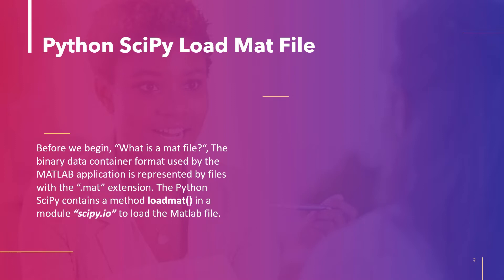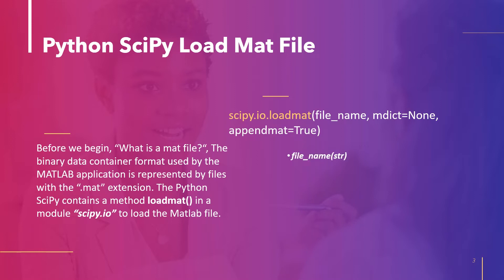The syntax of the method is as follows: scipy.io.loadmat, where parameters are: filename — a filename or open file-like object may also be passed; mdict — a dictionary to input mat file variables; appendmat — if the .mat extension is not already present, add it to the end of the specified filename. By default it is true.